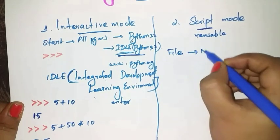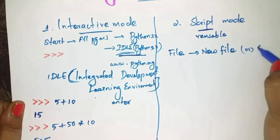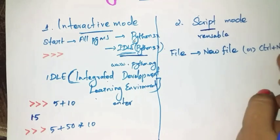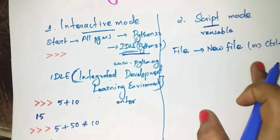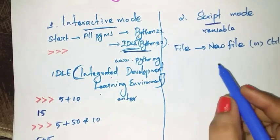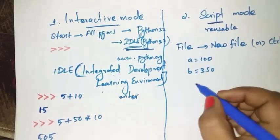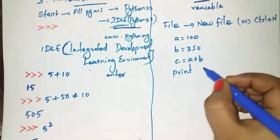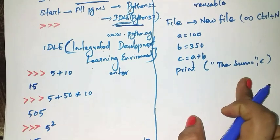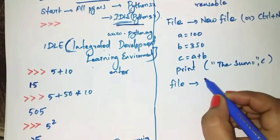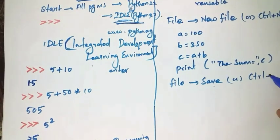How will you start script mode? To open the Python shell window, click the File menu and select New File option, or press Ctrl+N — this is the keyboard shortcut. An untitled blank script editor will be displayed on the screen. In that blank screen, type your code. For example: a = 100, b = 350, c = a + b, then print the sum, c.